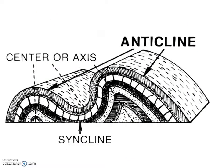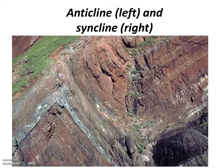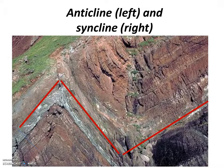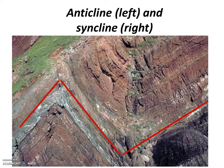The two most common types of folds are anticlines and synclines. Anticlines are examples of upturned folds, while synclines are examples of downturned folds. It's often the case that we see anticlines and synclines in pairs, as we see in this road cut image — the anticline is located on the left and the syncline is located on the right.